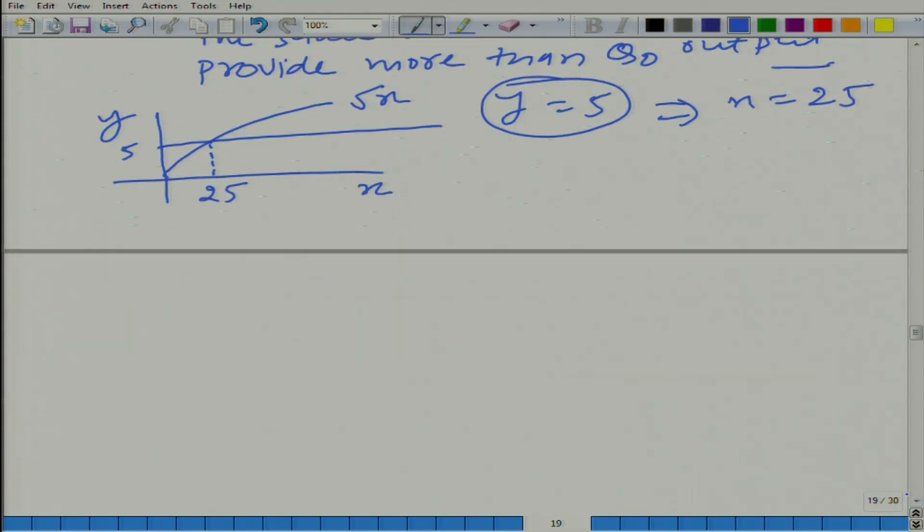What did we do here? We tried to obtain basically, isoquant is nothing but a level curve of the production process. Isoquant is nothing, in this case, isoquant is a level curve of the production function.